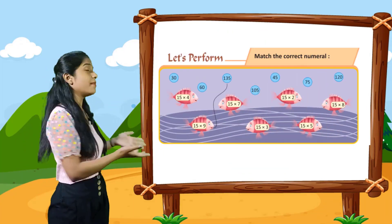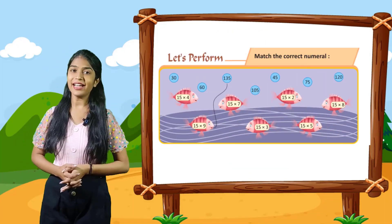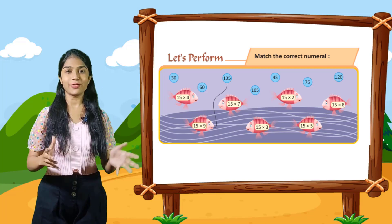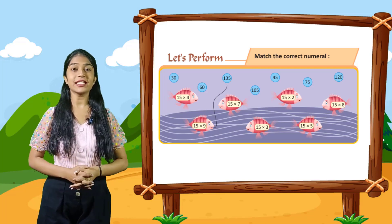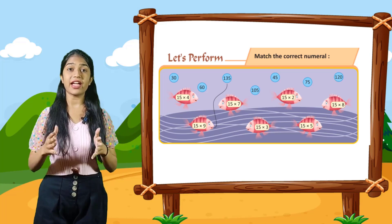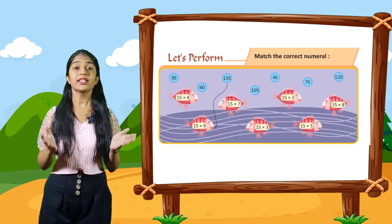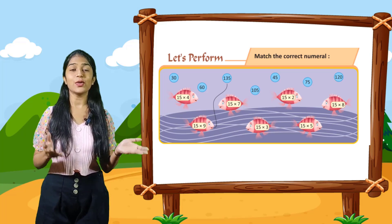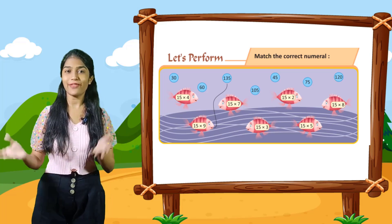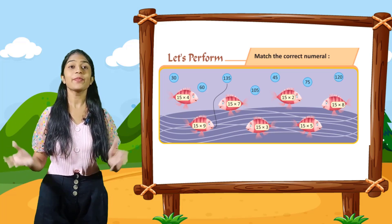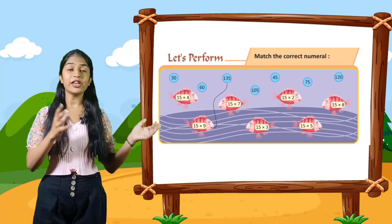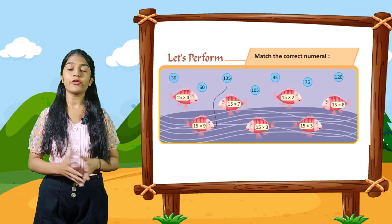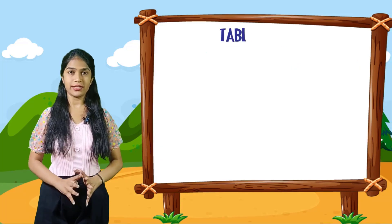So now let's perform. Match the correct numerals. Here 1 is done for you: 135. Which is 15 into 9 is equal to 135. So 15 into 9 is equal to 135. Rest you have to do yourself.